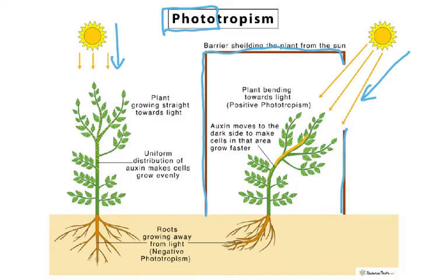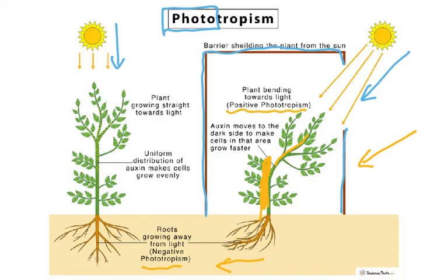Auxin moves to the darker side. So the auxin is going to be on the shaded side — not the side where light is coming from, but the other side — because there will be more cell elongation there. That is why the plant bends towards light. While the roots are going to grow away from light, so that is called negative phototropism. Negative means away from the stimulus, which in this situation is light.